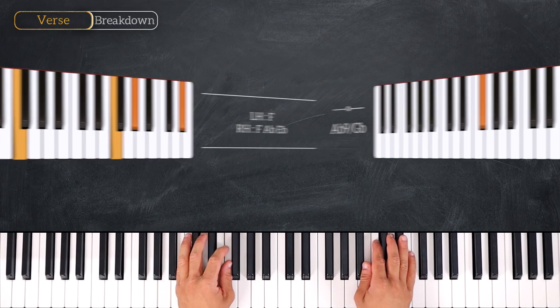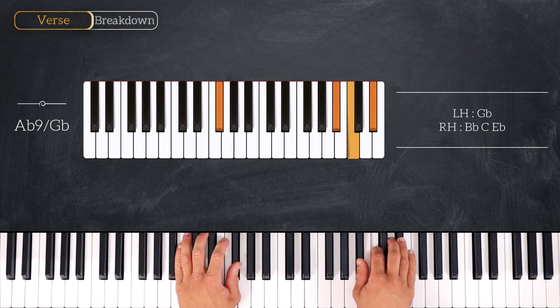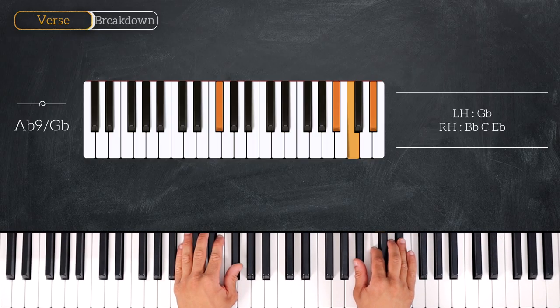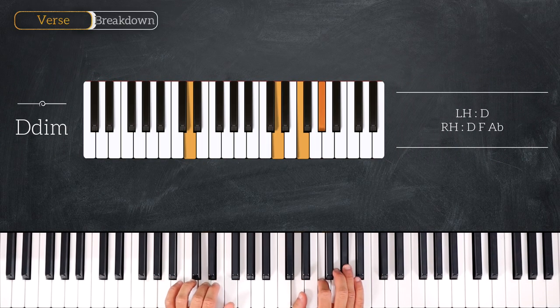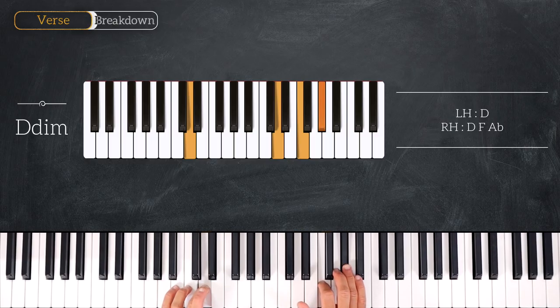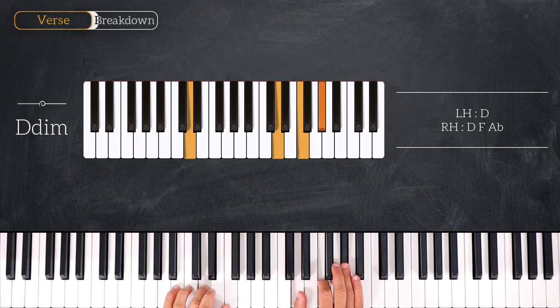Following this chord we'll play this Ab9 over Gb, playing Gb on the left, Bb, C and Eb on the right hand. Then from here we'll play a D diminished chord. So we have D on the left hand and D, F, Ab on the right hand.